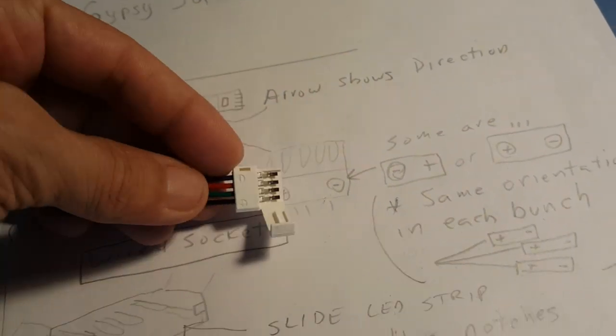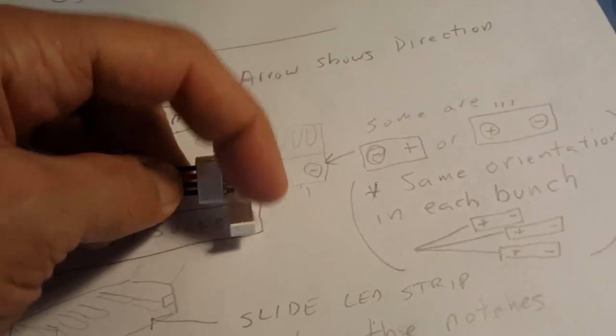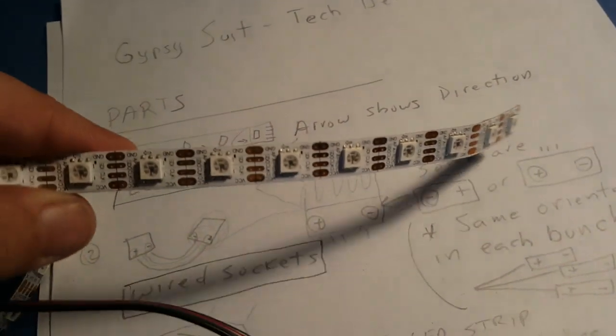So if you need to replace a strip, pop it open, pull it out, cut a strip to the same exact length, same number of LEDs, and slide it in there and click it.